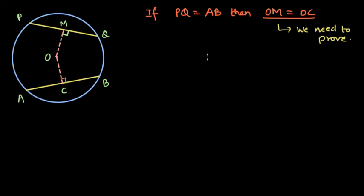How are we going to do this? First of all, let's collect all the information that we have. What I can see from the diagram is that clearly PQ is equal to AB because it's given to us.